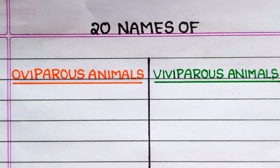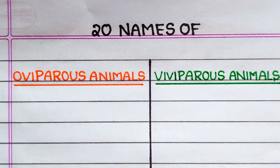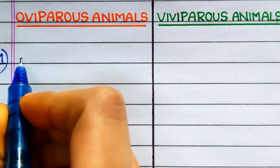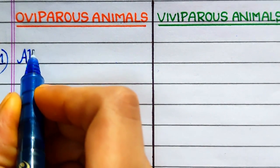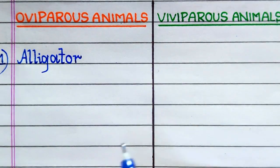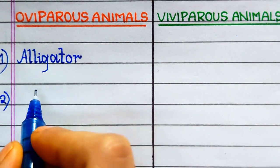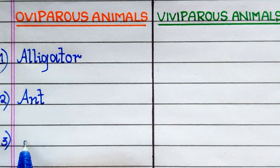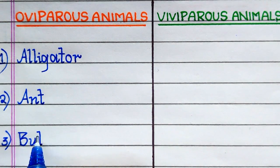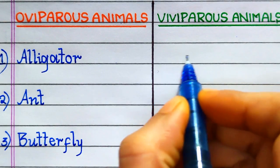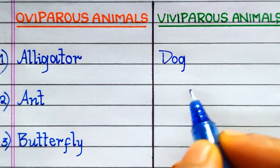Hello everyone, welcome to my channel. In this video I will write 20 names of oviparous animals and viviparous animals.